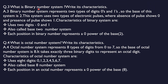The next question is: what is the binary number system and what are its characteristics? Binary number system represents two types of digits: 0 and 1. This system uses two types of electronic pulses. If the pulse is absent, then it is 0, and if the pulse is present, then it shows 1. It is also called the base 2 number system.